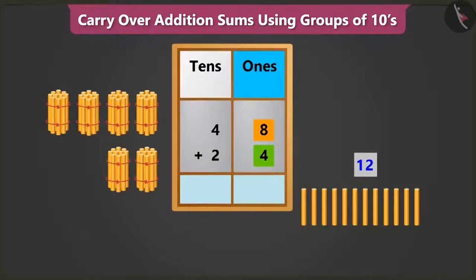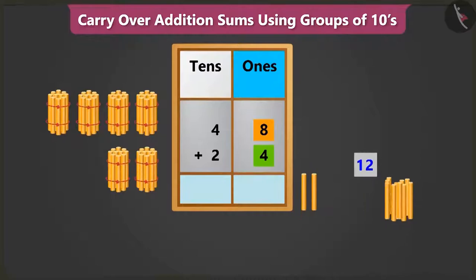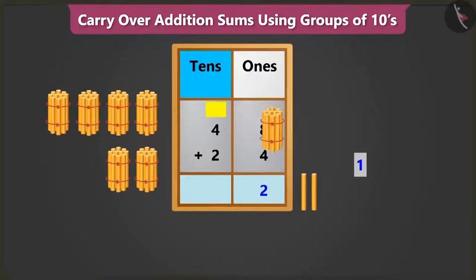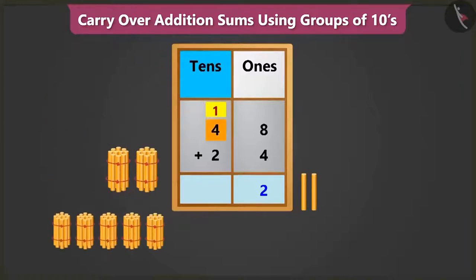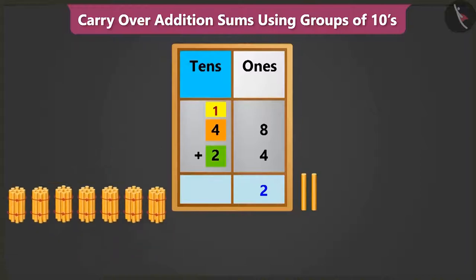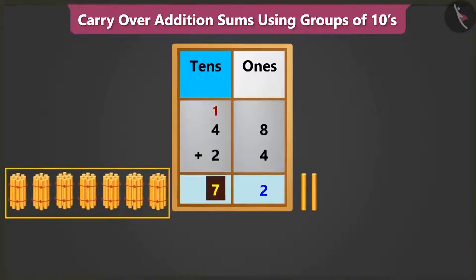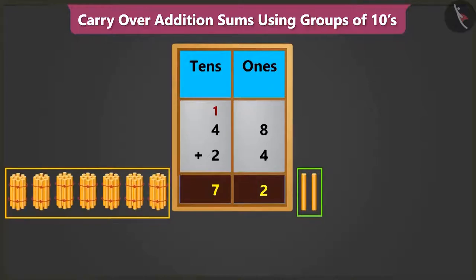Yes. So, from 12 ones, we will write 2 in the ones box and carry over 1 tens in the tens box. Now, when we add 1 and 4, we get 5 and adding 5 and 2, we get 7. Now, 7 tens added 2, 2 ones makes 72. So, we have to pay 72 rupees.